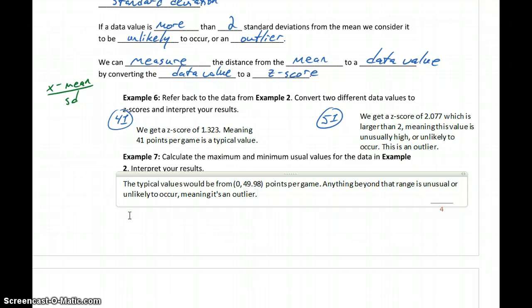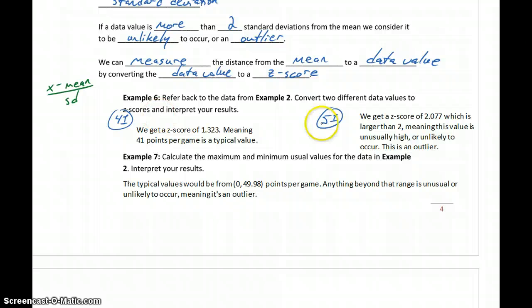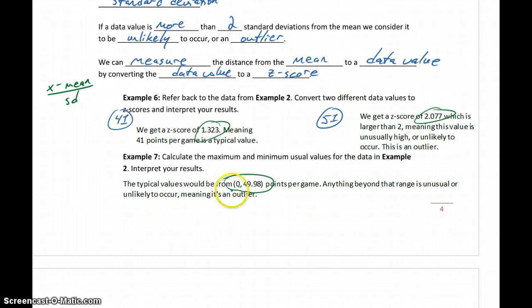So there are two different methods for identifying outliers for symmetric distributions. We can take individual data values and calculate z-scores, or we can generate the range of minimum and maximum usual values. Anything within that range is within two standard deviations of the mean; anything beyond it is more than two standard deviations away, which automatically classifies it as an outlier.